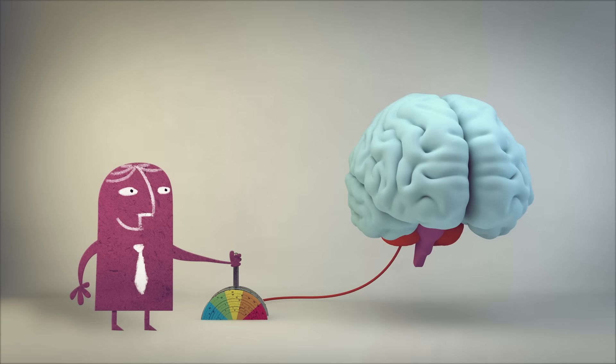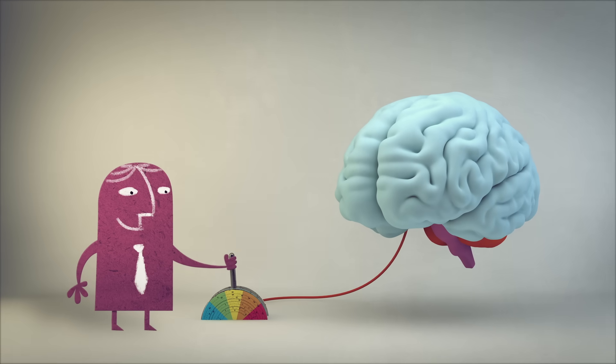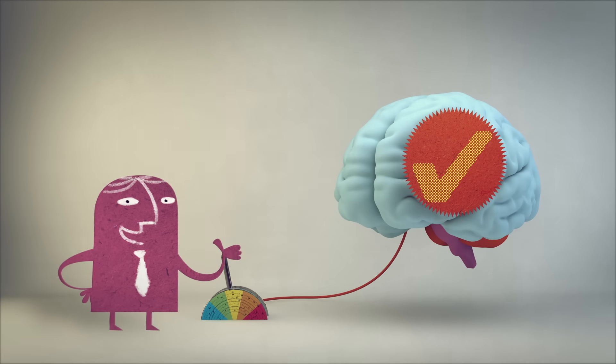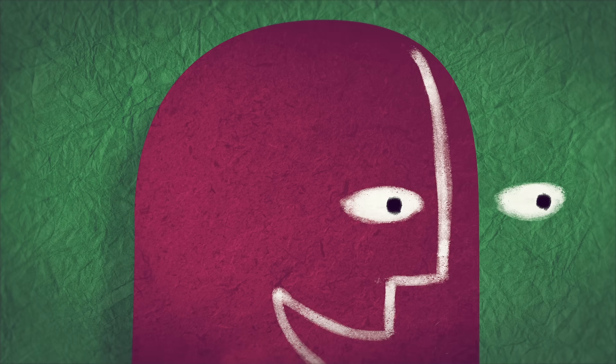The solution is to find the optimum proportion of cells that the brain can have active at once. For maximum efficiency, between 1% and 16% of cells should be active at any given moment. This is the energy limit we have to live with in order to be conscious at all.